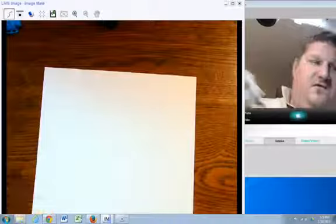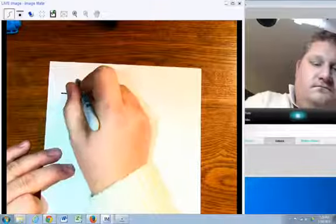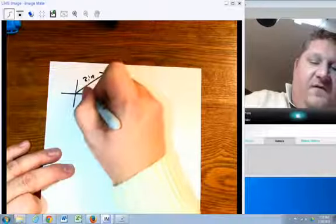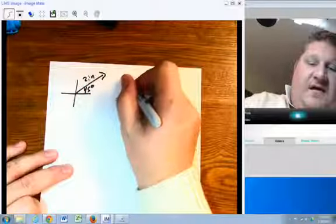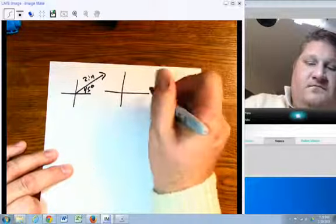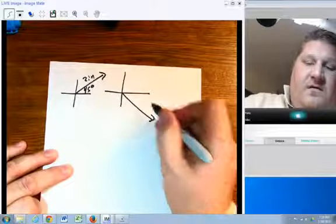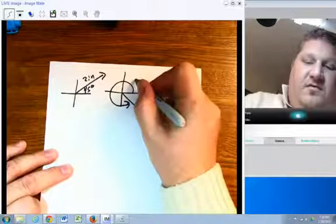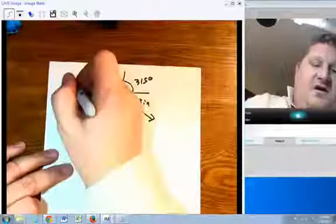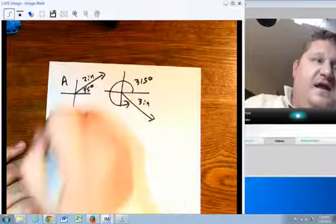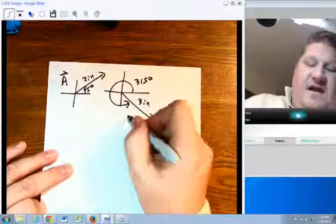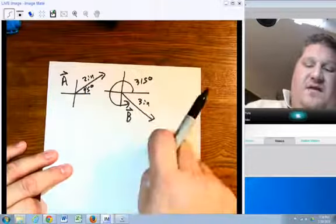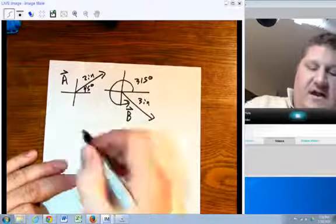If we wanted to take two vectors - say we have 2 inches at 45 degrees and we have 3 inches at 315 degrees - the question becomes how do we label them? We're going to take this and call it A with a little arrow above it, that's vector A. This is B with a little arrow above it. You'll notice only a one-headed arrow.